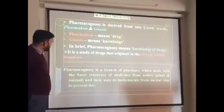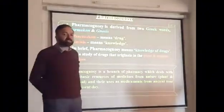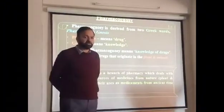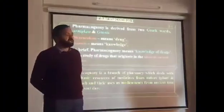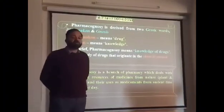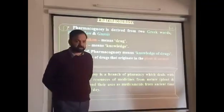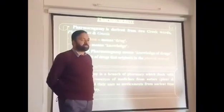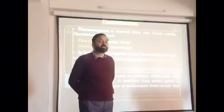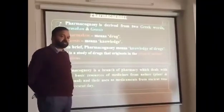Pharmacognosy is the study of drugs that originated from the plant kingdom. Drugs are obtained from three sources: plant sources, animal sources, and mineral sources. Drugs are also called crude drugs because in pharmacognosy they are directly obtained from plants, animals, or any other natural or mineral source.